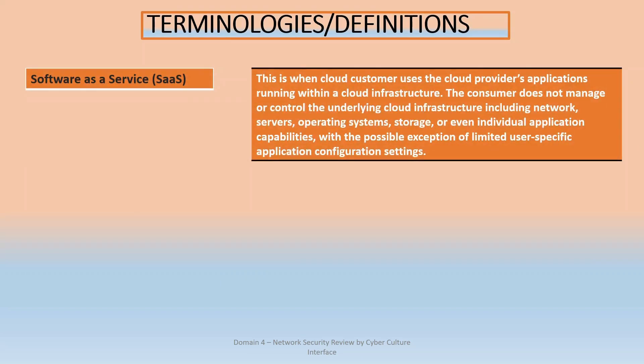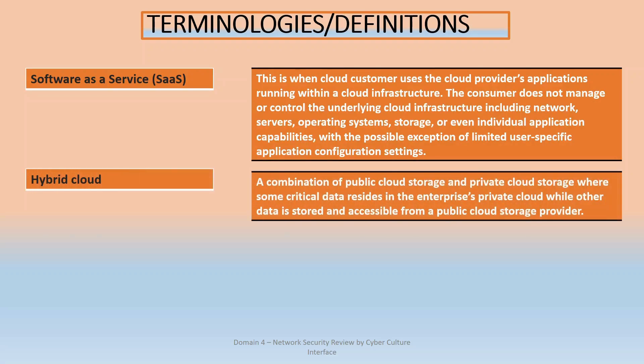Software as a Service (SaaS) is when a cloud customer uses cloud applications running within a cloud infrastructure. For instance, you can log into a cloud infrastructure and use their accounting software. You don't necessarily need to own the software — maybe you just need to run an accounting project, so you subscribe, pay, use the software, get your data, and when the contract ends, it's done. This is called Software as a Service.